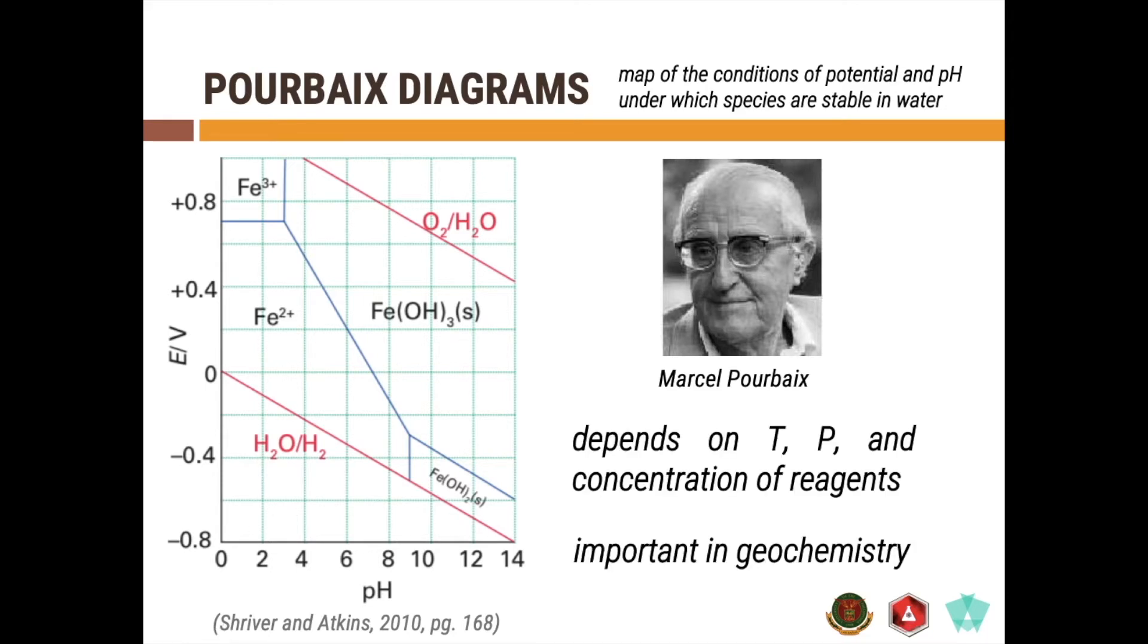The Pourbaix diagrams are actually dependent on temperature, pressure, and the concentration of the reagents. If you have a certain Pourbaix diagram like this, for example, if there is a change in the temperature or a change in the pressure, then you expect that you will have changes on how you construct the Pourbaix diagram. This is of huge importance in geochemistry as well as for the study of the corrosion of materials.